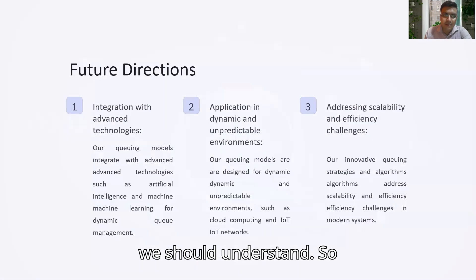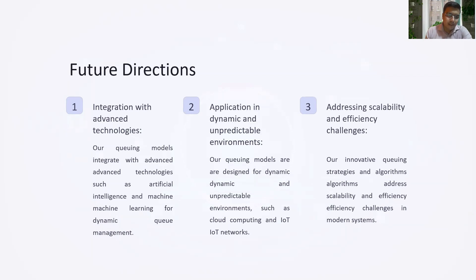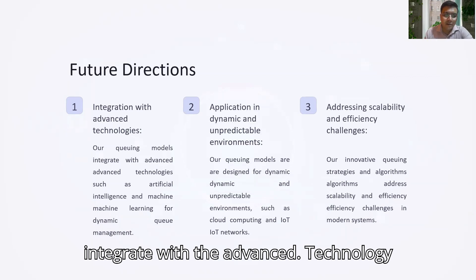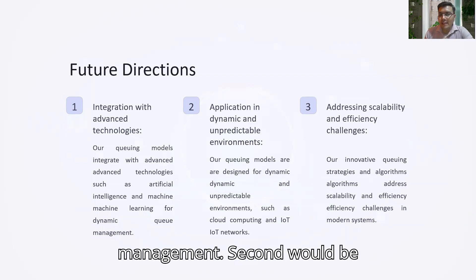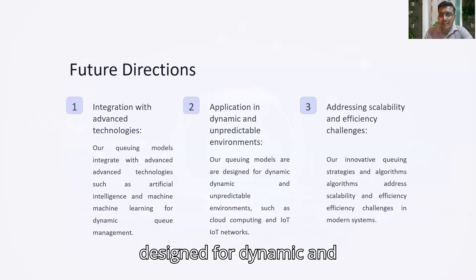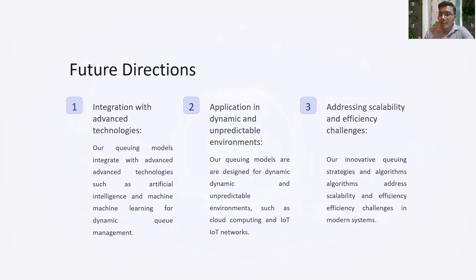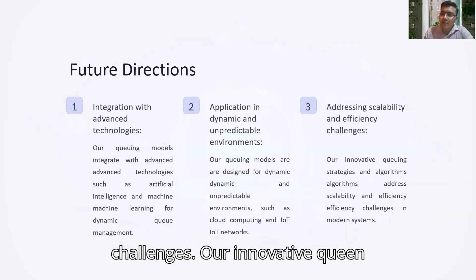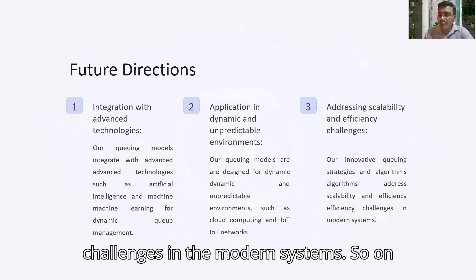Future directions include: integration with advanced technologies, where queuing models are integrated with artificial intelligence and machine learning for dynamic queue management; application in dynamic and unpredictable environments such as cloud computing and IoT networks; and addressing scalability and efficiency challenges, where innovative queuing strategies and algorithms address scalability and efficiency challenges in modern systems.